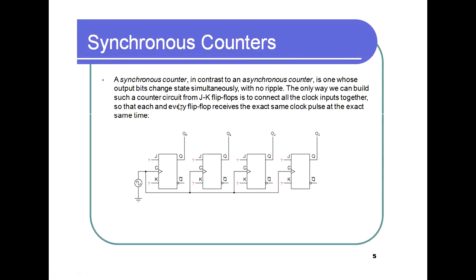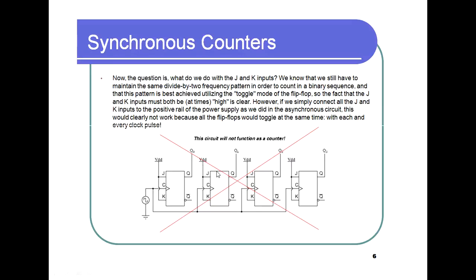The only way we can build such a counter circuit from JK flip-flops is to connect all the clock inputs together — the first, second, third, and fourth — so that each and every flip-flop receives the exact same clock pulse at the exact same time.